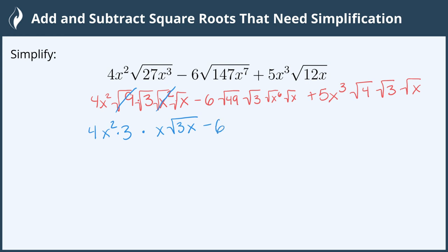The next one, the 6 remains out front. The square root of 49 is 7 so we'll multiply this by 7. The square root of x⁶ is x³. We just divide the exponent by 2. And the square root of 3 and x are not perfect squares so they need to remain in the radical.